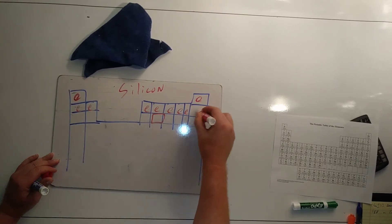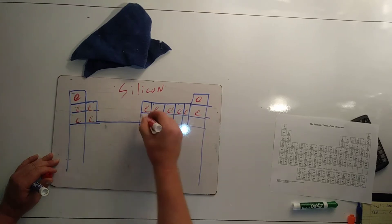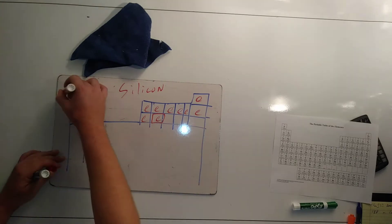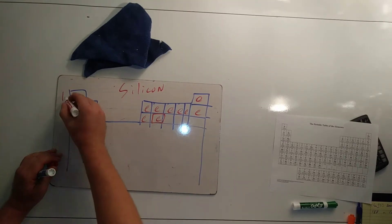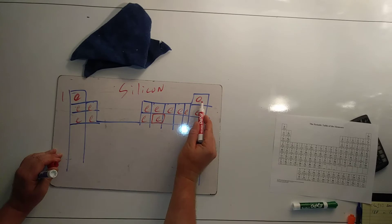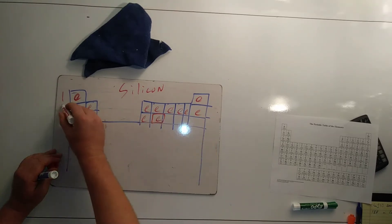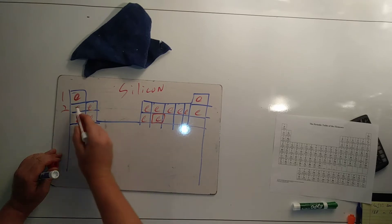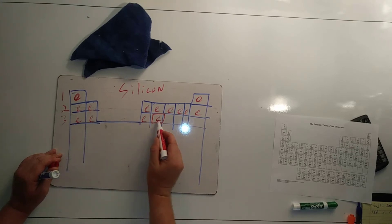We fill in our E's until we get to the box of silicon and that will give us our neutral silicon. The first shell or innermost shell contains two, the second shell contains eight, and the valence or third shell contains four.